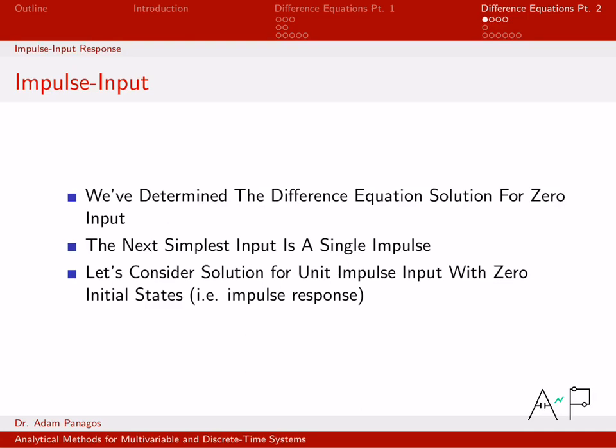A lot of our last videos have talked about the zero input response, which is the solution to a difference equation when the input is zero for all time. We're going to start building up the complexity now. The next thing we're going to look at is how to solve a difference equation for a system at rest when the input is a single impulse applied at time zero.